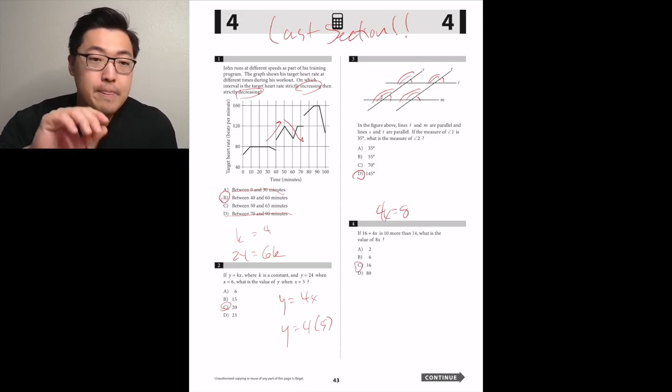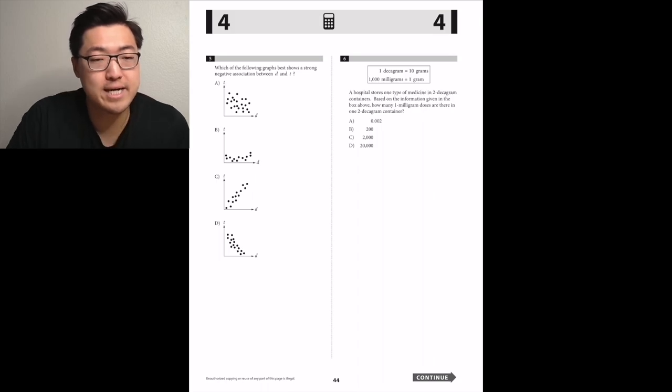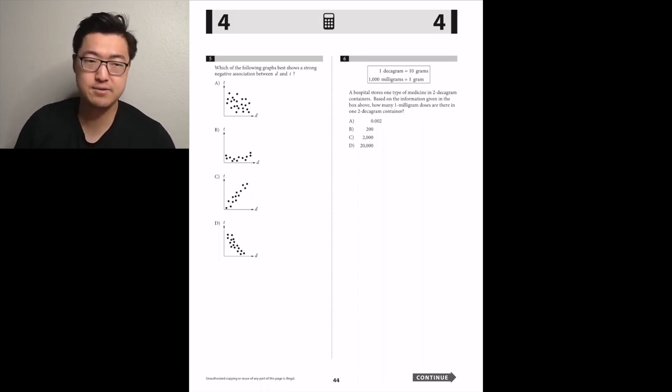Which of the following graphs best shows a strong negative association between D and T? That means when D increases, T goes down. Like A kind of, but it's really scattered. D is like better, I think, because it's more clear. So D.